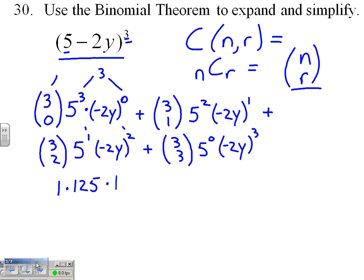So our first term becomes 1 times 5³, which is 125, times (-2y)⁰, which is 1. Plus our second term: C(3,1) is 3. How many groups of one can I choose from three? 3 times 5².